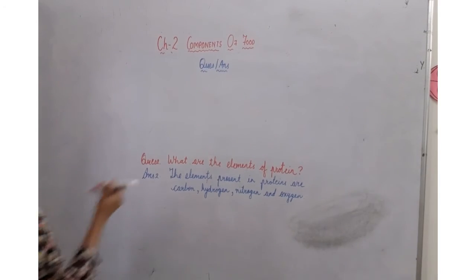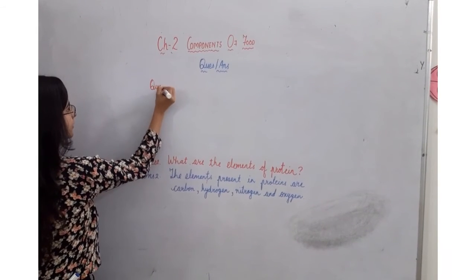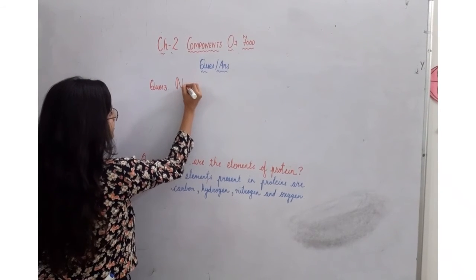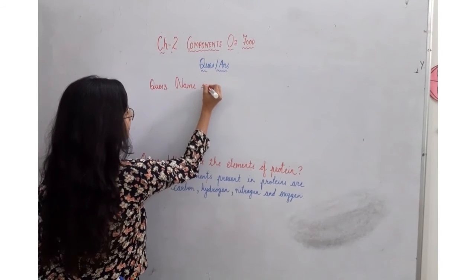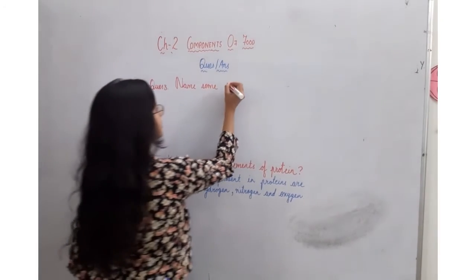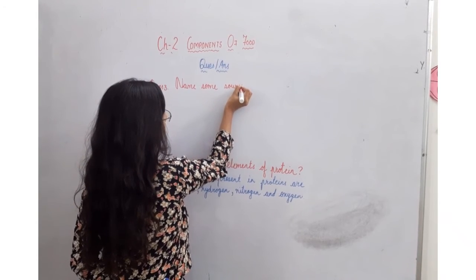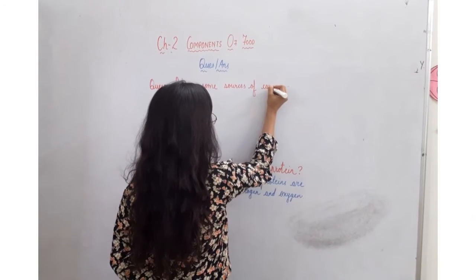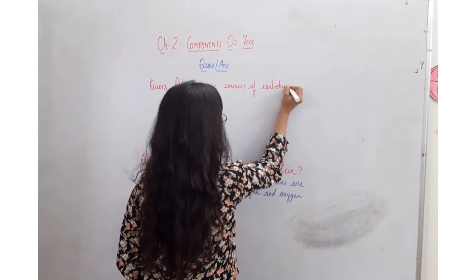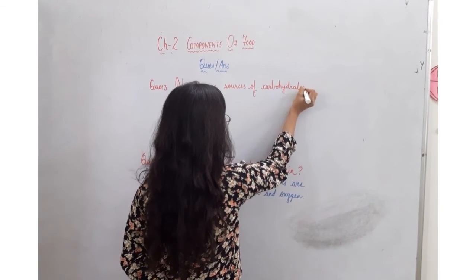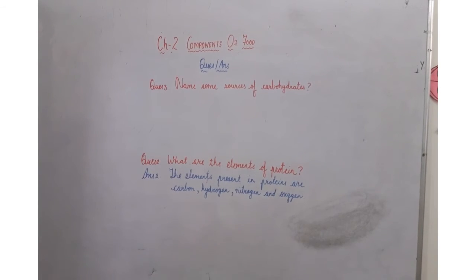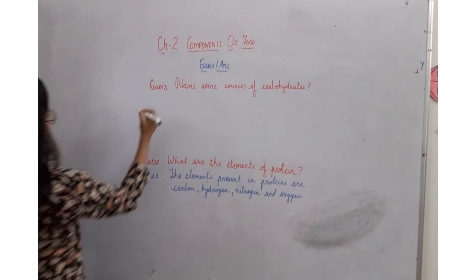Now write question number 3. Question number 3. Name some sources of carbohydrate. Name the source of carbohydrate, where do we get carbohydrate from. So write it down, answer 3.